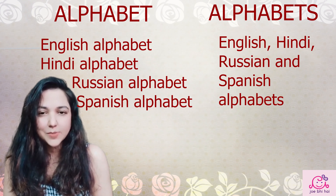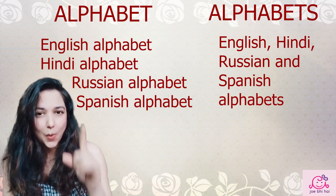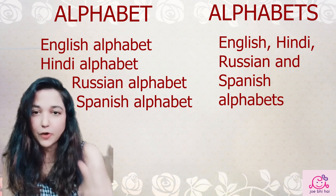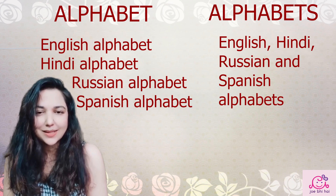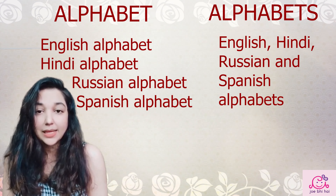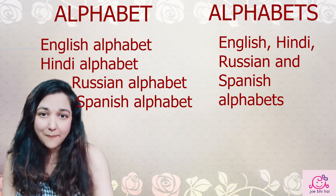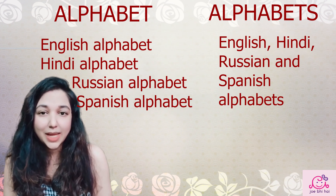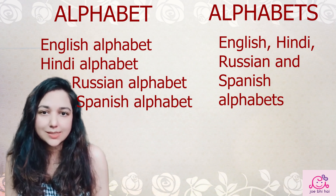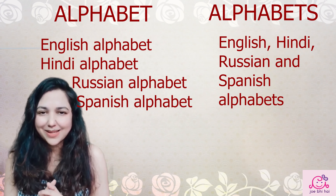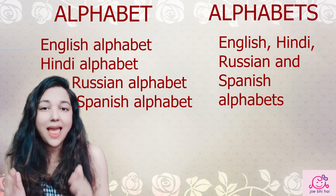So, what's the difference between alphabet and alphabets? In any language, there is only one alphabet. For example, A to Z, 26 letters, is the English alphabet. Similarly, there is the Russian alphabet consisting of 33 letters, and then the Hindi alphabet, and many more. So every language has one alphabet. But when we talk about more than one language, then we say alphabets. In simplified form, the plural of alphabet is alphabets.